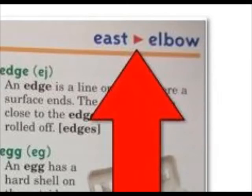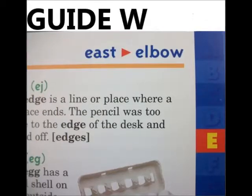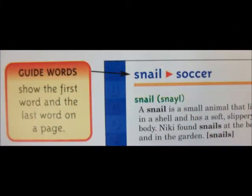They're called guide words. The two words at the top of the page are called guide words — G-U-I-D-E-W-O-R-D-S. Guide words are words that guide you to the right page so you can find the word you're looking for. The job of guide words is to show you alphabetically what words you will find on the page.